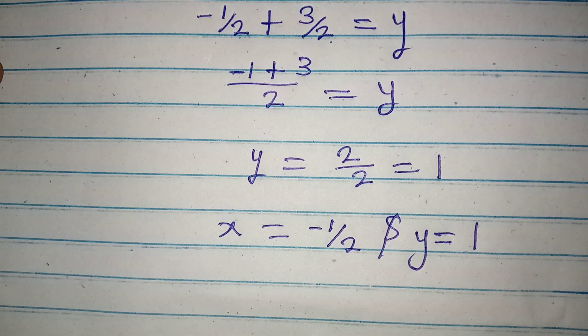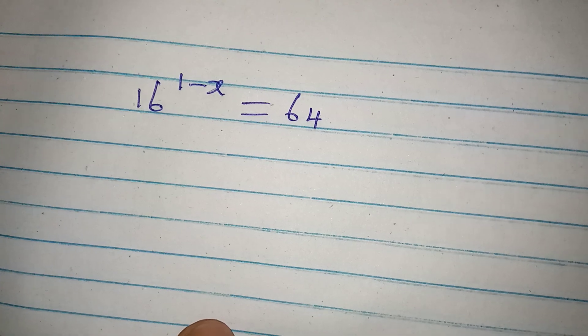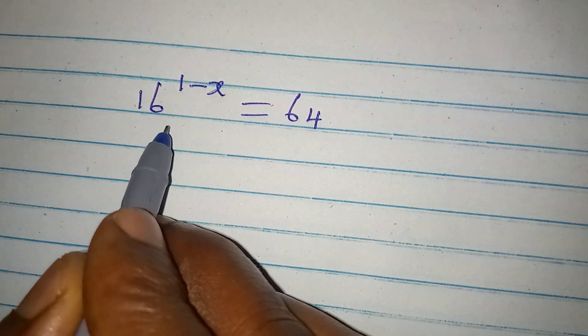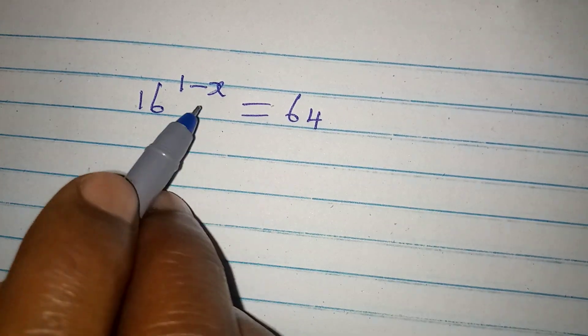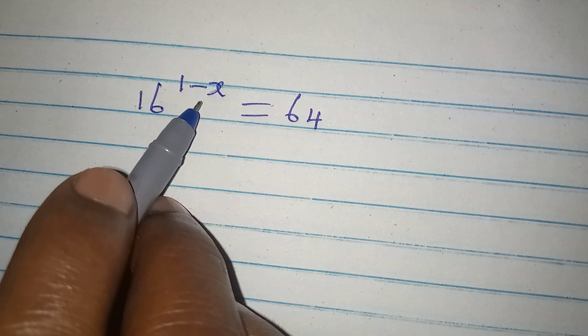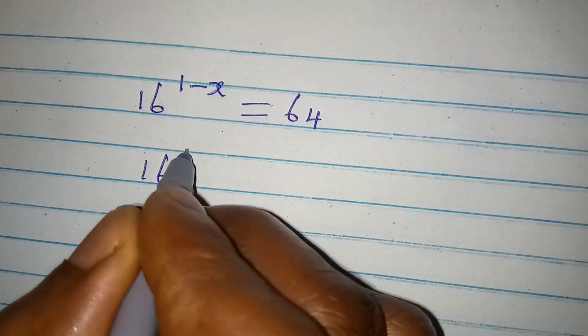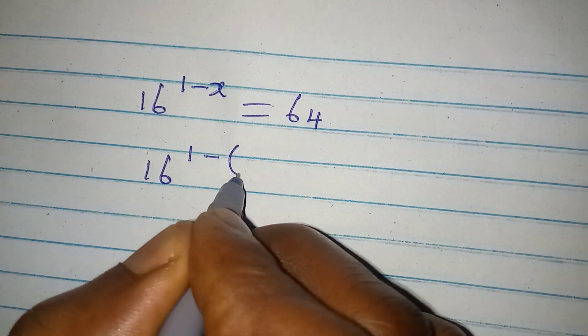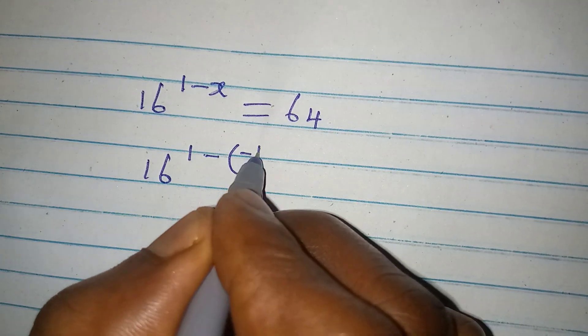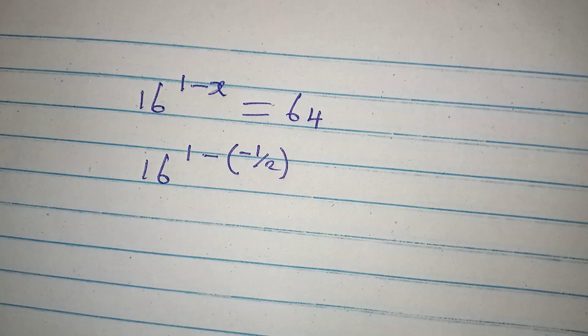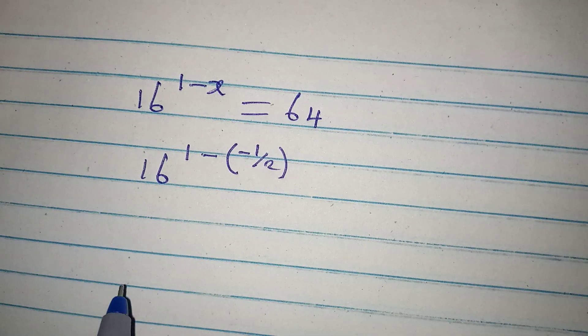But hold on, let's confirm it. So this is the first equation, equation 1. And it only has x as the unknown variable. So 16 to the power of 1 minus x is minus 1 over 2. Now will this give us 64?